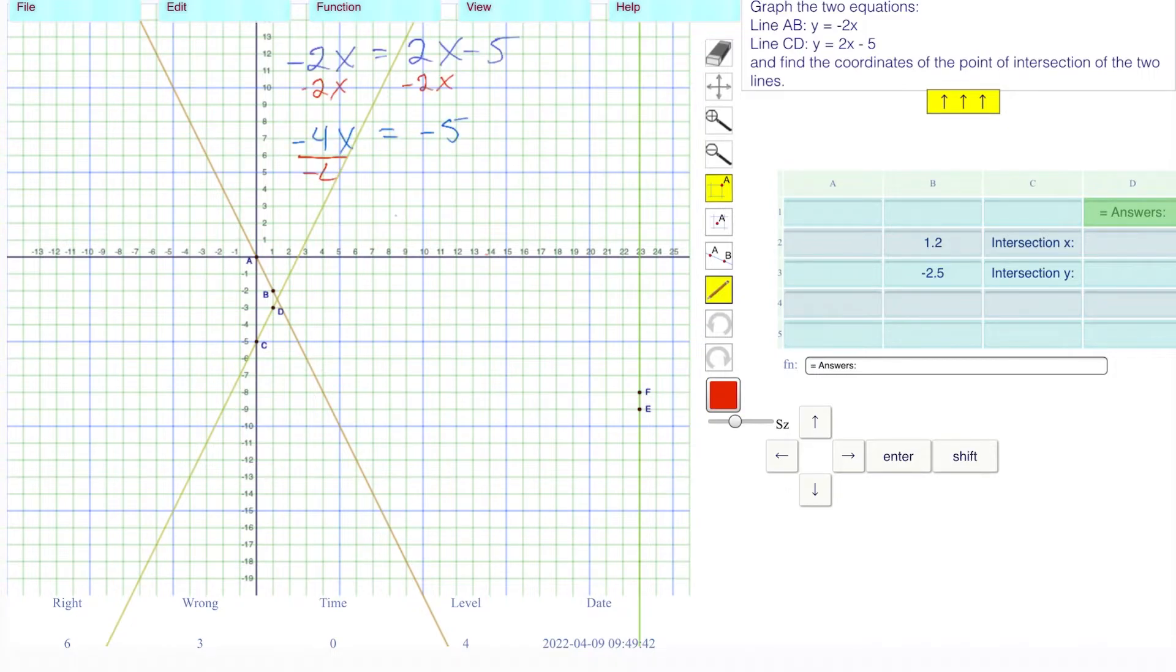Minus 2x minus 2x gives us negative 4x is equal to negative 5. I want to get rid of that negative 4, it's multiplying the x. I'm going to divide both sides by negative 4. We end up with x is equal to 5 quarters or 1.25.